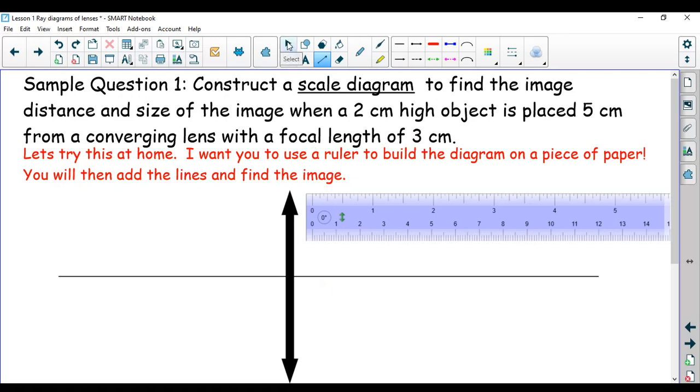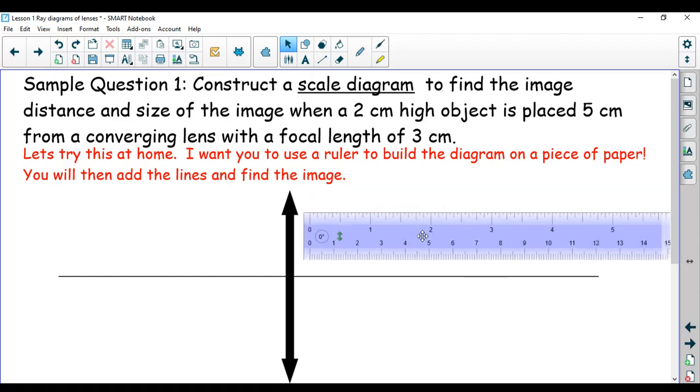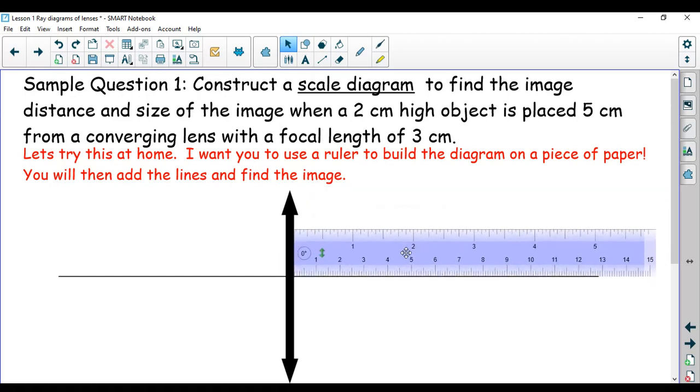Then I need to put on my actual focal points. And that means I'm going to have to use my ruler. That's what my ruler is for. It says to find an image distance and size of the image when a two centimeter high object is placed five centimeters from a converging lens with a focal length of three. So I'm going to start off by just moving my ruler in place. I'm going to bring my ruler to the, there we go. Put my ruler in place.